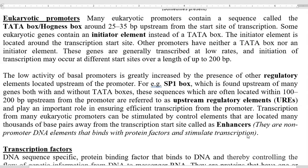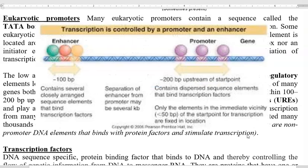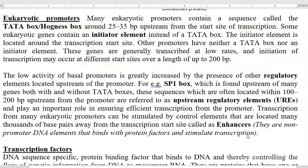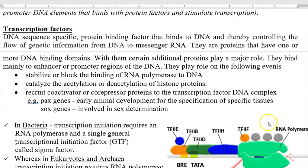UREs play an important role in ensuring efficient transcription from the promoter of that particular gene. Sometimes the transcription of eukaryotic promoters may be stimulated by certain control elements located several thousands of base pairs away from the transcription start site. Such control elements are technically referred to as enhancers. They are non-promoter DNA elements that bind with protein factors and can stimulate the process of transcription. Transcription factors are protein binding factors that bind to DNA sequences and increase the rate of transcription.